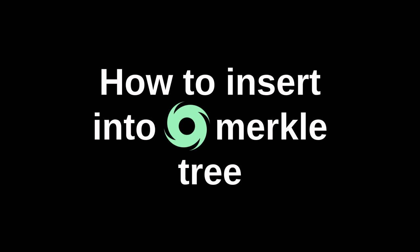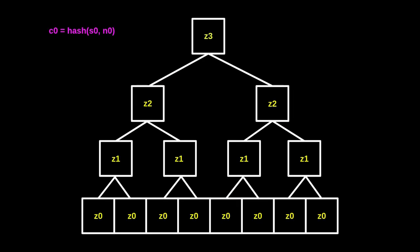Let's see how to insert into the Tornado Cash Merkle Tree. Before anyone deposits, this is the Merkle Tree of Tornado Cash. The first person to deposit selects a secret — we'll name it S0 — and a nullifier, N0. They hash them together to produce a commitment named C0. When the first user deposits, the commitment is inserted as the first element of the array. We then update the hash above, update the hash above that, and finally update the Merkle root. That is what the Merkle Tree looks like when the first user deposits.